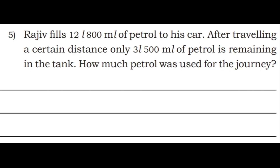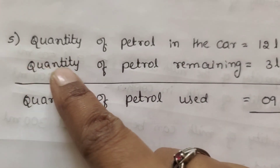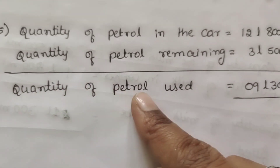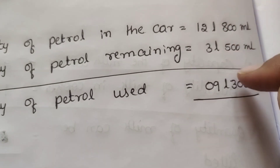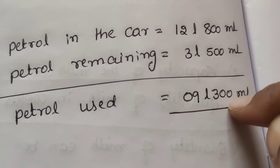Next question: Rajiv fills 12 liter 800 ml of petrol to his car. After travelling a certain distance, only 3 liter 500 ml of petrol is remaining in the tank. How much petrol was used for the journey? Quantity of petrol in the car is equal to 12 liter 800 ml. Quantity of petrol remaining is equal to 3 liter 500 ml. 0 minus 0 is 0, 8 minus 5 is 3, 12 minus 3 is 9. Answer: 9 liter 300 ml.